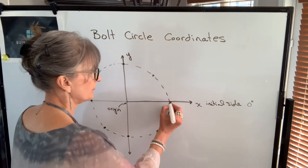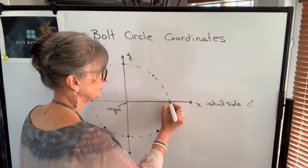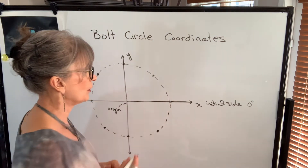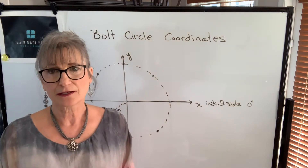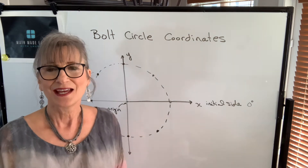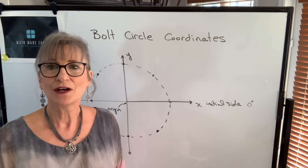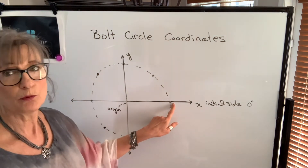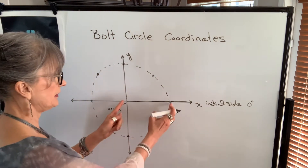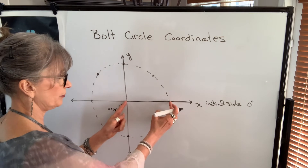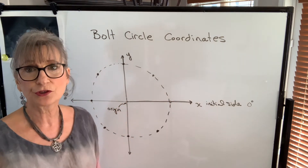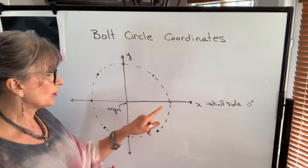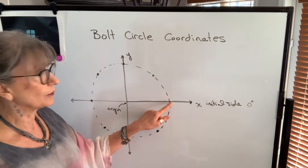We're going to place the first hole of our bolt circle on that axis. We can find the coordinates of our first hole: the x-coordinate will simply be the radius of that bolt circle, and the y-coordinate will be zero.